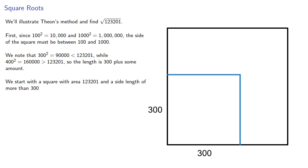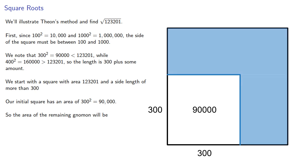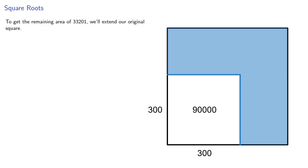Our initial square has an area of 300² = 90,000, so the remaining gnomon area is 33,201. To get this remaining area, we'll extend our original square.